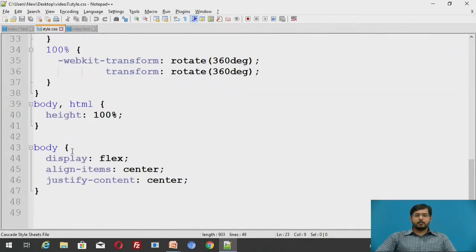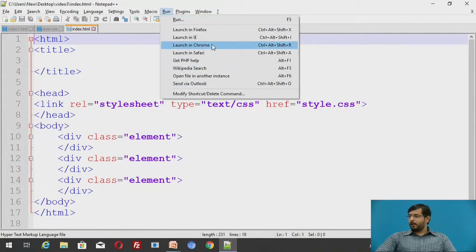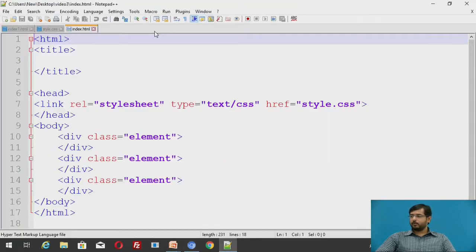And this is the styling for its body. I will run this particular file. Now, you can see these are the squares with 100 width and 100 pixels of height. And they are rotating at 360 degrees. When it is at 0% it is rotating at 0 degrees. And when it is at 100% it is rotating to 360 degrees.